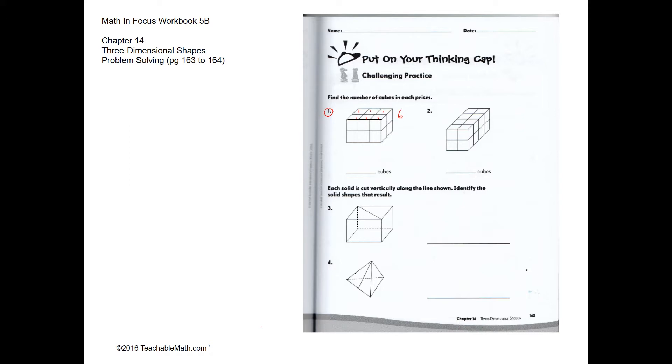For the bottom level we have six as well, so together it's going to be twelve. And for question number two, we have one, two, three, four, five, six, seven, eight. We have eight on the first layer and eight on the second layer, so together that's sixteen.